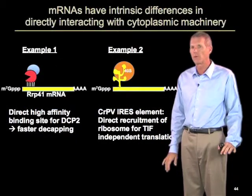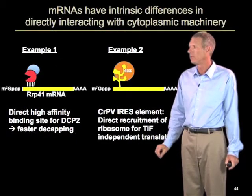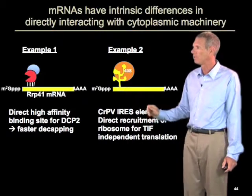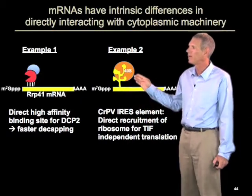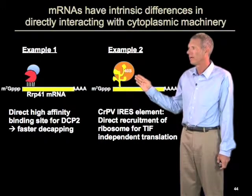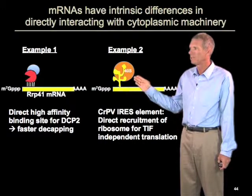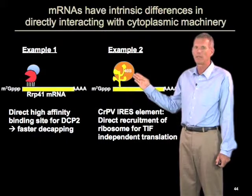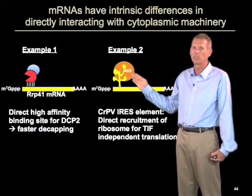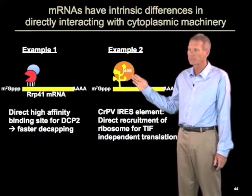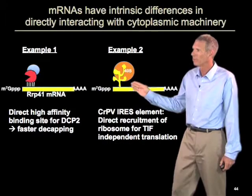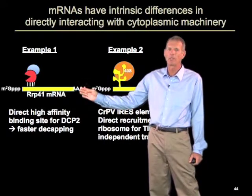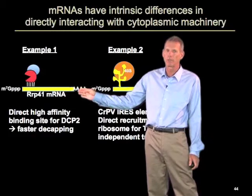First, to highlight something we've already talked about: there are intrinsic differences between different mRNAs. With translation, some mRNAs can have IRESes, which allows them to interact directly with the translation machinery, bypassing the need for certain translation initiation factors. Similarly, there are examples where RNAs interact directly with the RNA decay machinery, and therefore influence their fate.